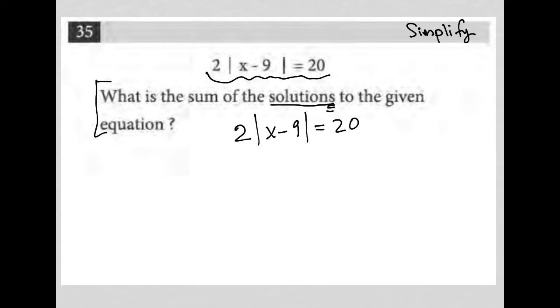Whenever you're solving an absolute value equation, the first rule is to isolate the absolute value. So I'm going to divide both sides by 2. We do not want to distribute this across. We want to isolate the absolute value. So this becomes absolute value x minus 9 is equal to 10.